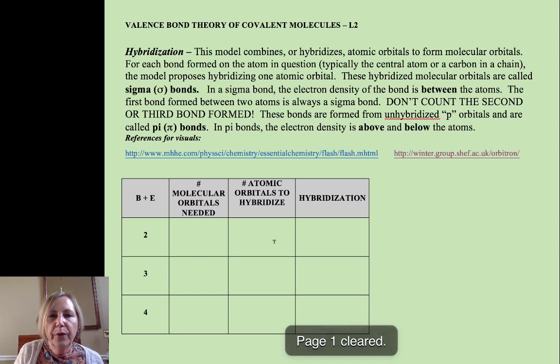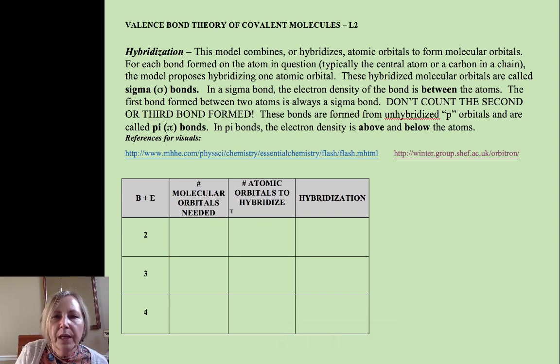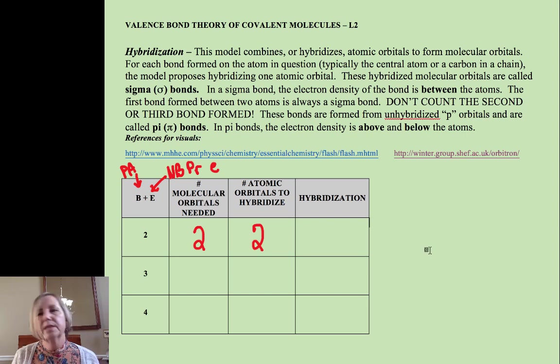So let's take a look. If we add B plus E—B is my symbol for peripheral atoms or groups of atoms, and E is for my non-bonded pairs of electrons on a center—so if that's two, I need two molecular orbitals, so I'm going to hybridize two atomic orbitals.